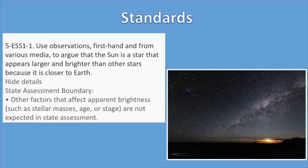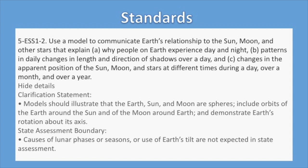You'll also see that we're working with two standards for this unit. The first is that the sun is a star that appears larger and brighter because it's closer to Earth. For this video, however, we're going to show you some activities that focus on the second standard: use a model to communicate Earth's relationship to the sun, moon, and other stars and explain why people on Earth experience day and night; patterns and daily changes in length and direction of shadows over a day; and changes in the apparent position of the sun, moon, and stars at different times during a day, over a month, and over a year.